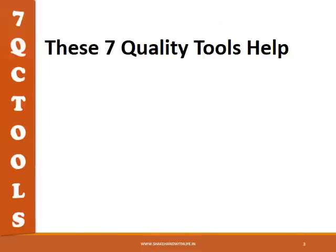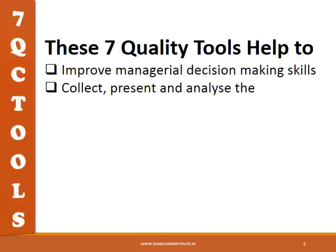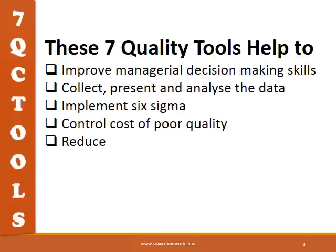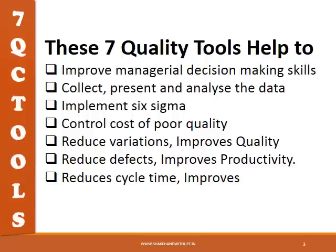These seven quality tools help to improve general decision-making skills, collect, present, and analyze data, implement Six Sigma, control cost of poor quality, reduce variations, improve quality, reduce defects, improve productivity, reduce cycle time, and improve efficiency.